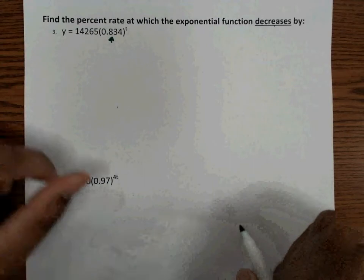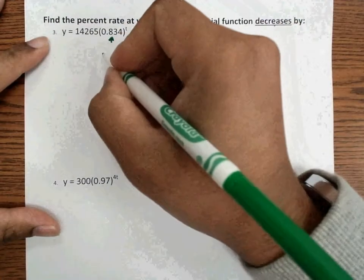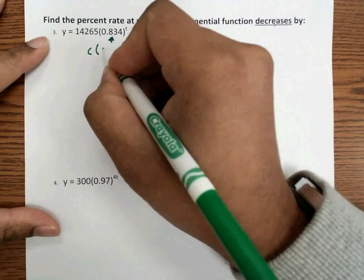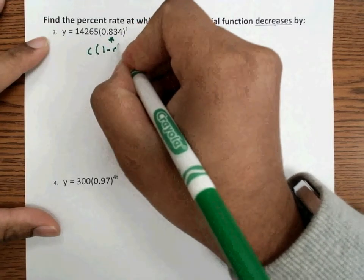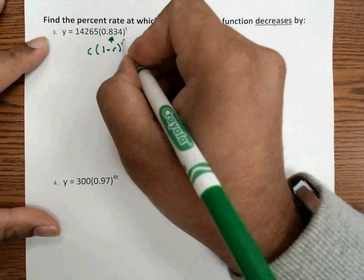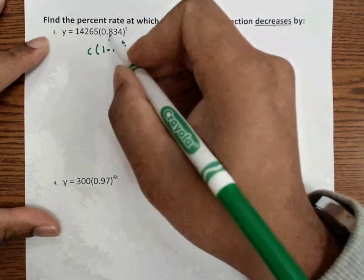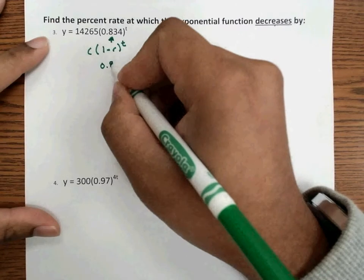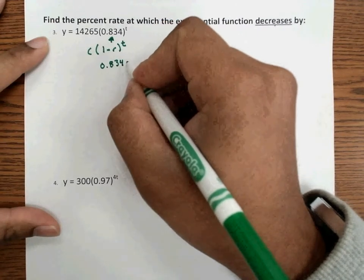So if you remember before, our exponential decay function is c times (1 minus r) to the t. And we just have a t. There's no number in front of the t. So we can take this inside term, which is 0.834, and set it equal to the 1 minus r.